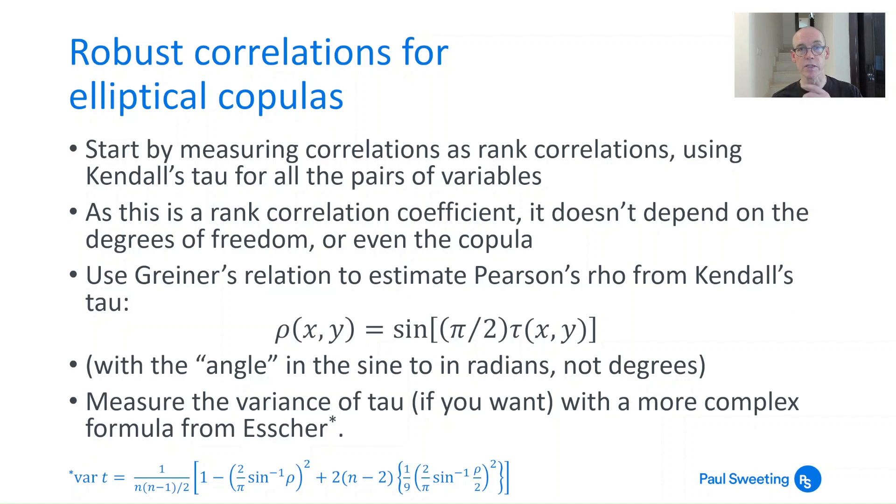If you do want to use some fairly involved mathematics, then the starting point is you actually calculate your correlation coefficients as rank correlation coefficients using Kendall's tau for every pair of variables. If you imagine that you've got, say, ten asset classes, in the same way that if you had ten cells of data for two asset classes, you'd have to do 45 calculations for Kendall's tau, ten asset classes means you're going to have 45 pairs of correlations that you need to look at. But anyway, you can calculate Kendall's tau for all those pairs of variables.